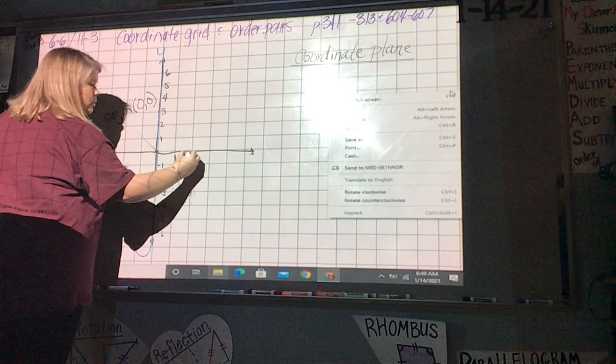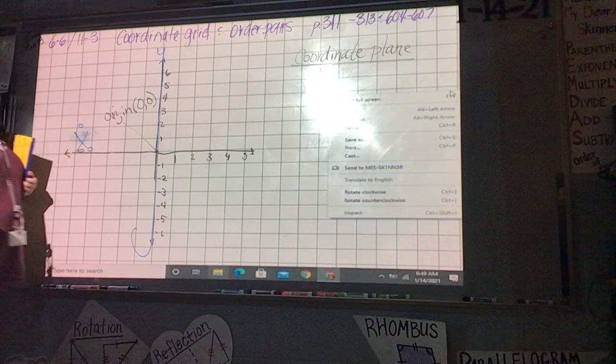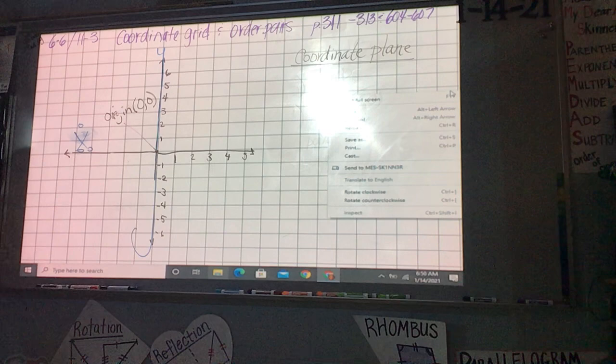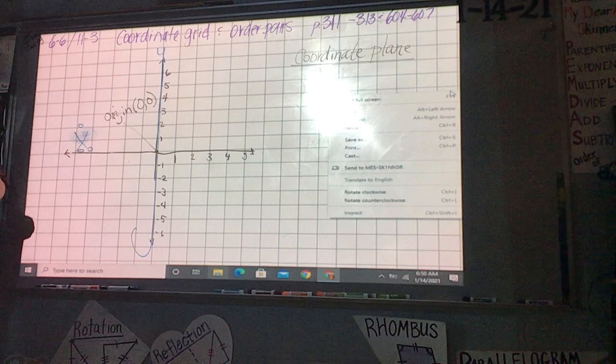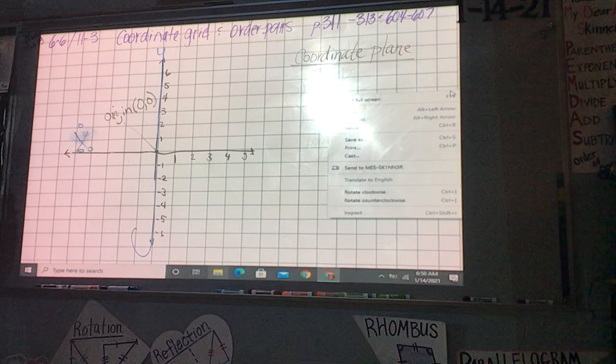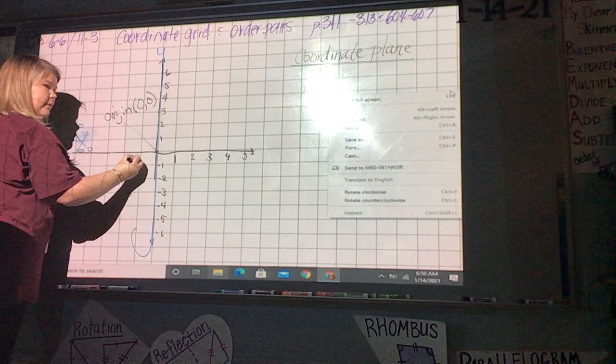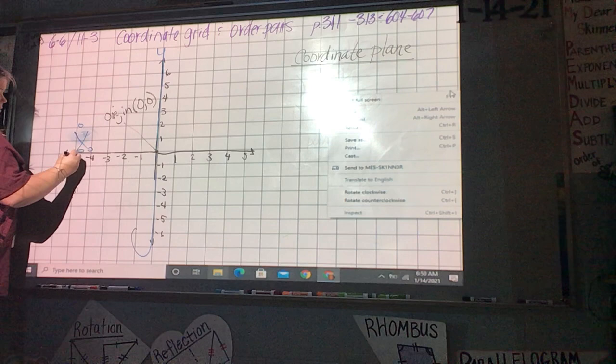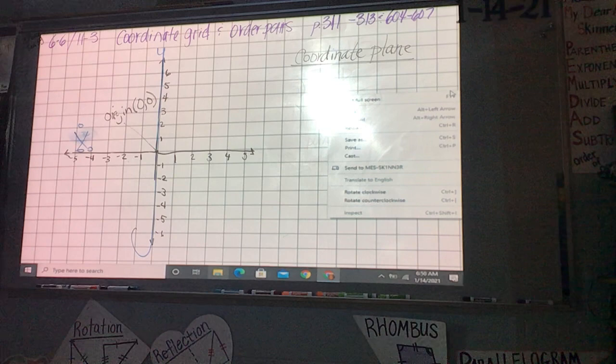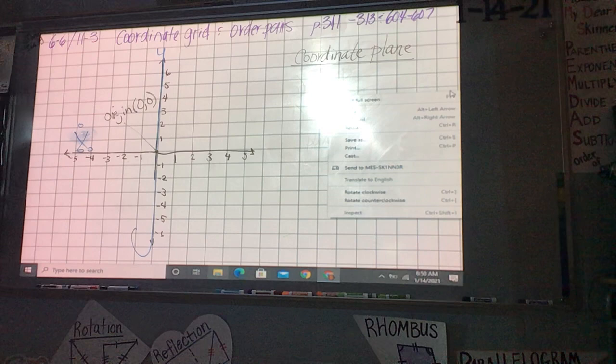So, this is going to be one, two, three, four, five. Notice, I'm still writing on the line, not in the box. On the line. What's this going to be? Negative one, negative two, negative three, negative four, negative five.